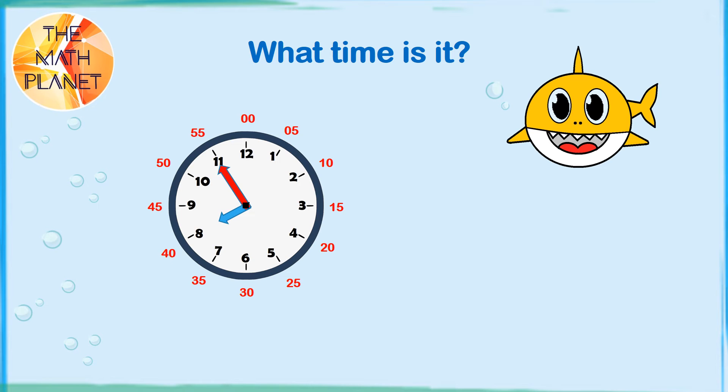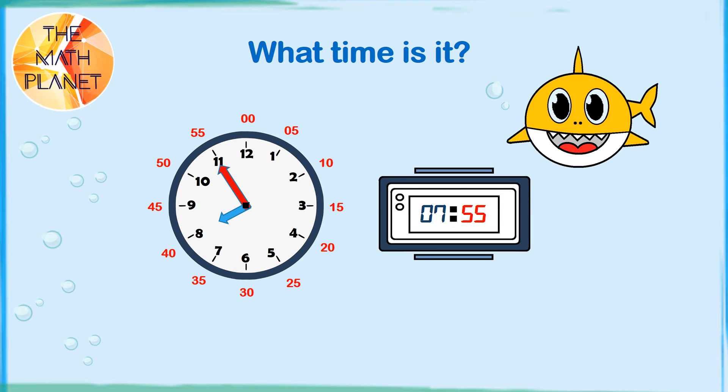What time is it? The hour's hand is between 7 and 8 but it's closer to 8. The minute's hand points to 11. So, it's 7.55. When we criss-cross, we will say it's 55 minutes after 7. We can also say it's 5 minutes before 8.